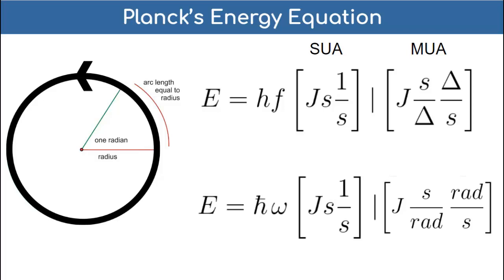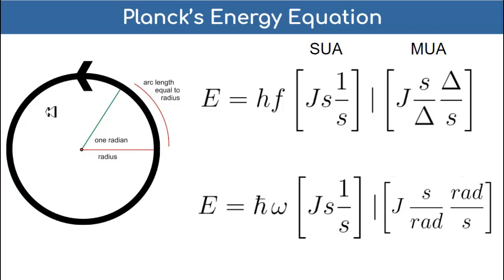All the units in the international standard are arbitrary - the second is arbitrary, the meter is arbitrary, the kilogram is arbitrary, the coulomb is arbitrary. If radians were in the standard, they would also be arbitrary. The only unit that isn't arbitrary - which is in modified unit analysis but was left out of the international language - is the cycle. The cycle is once around the circle, it's the circumference of the circle, it is the wavelength. And I believe that angular momentum, which I'm now going to refer to as circular momentum, is quantized by the cycle.